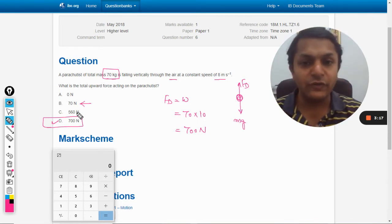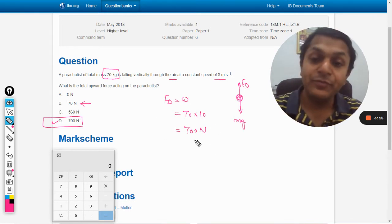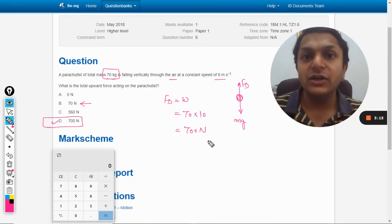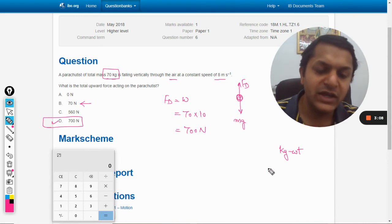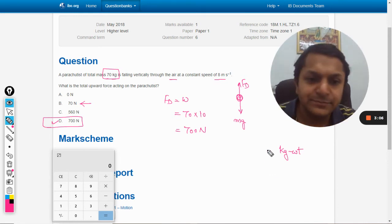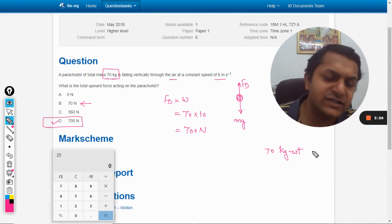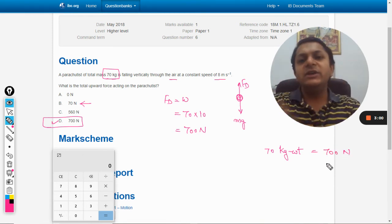Okay, by the way, there is another unit of force which is kg-weight. So if I talk about kg-weight, the 70 kg-weight is equal to 700 Newton. So it only means that...